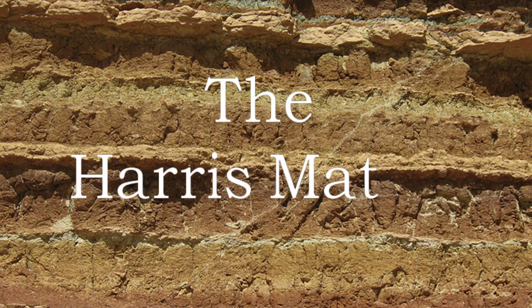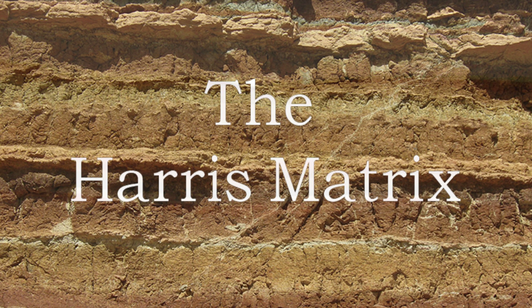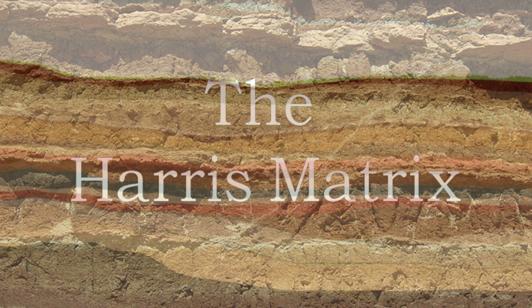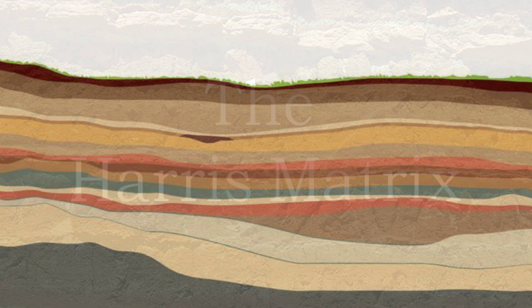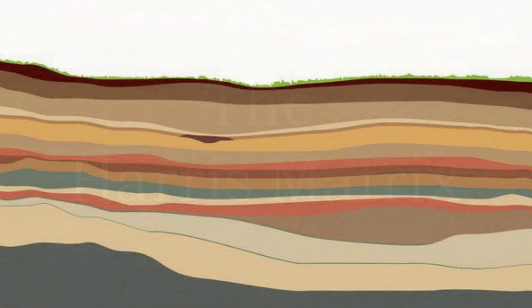The Harris Matrix is a method used in archaeology to record the stratigraphic layers or strata of an archaeological site. These layers are geological, environmental and archaeological formations and deposits, which are built up over time and represent different time periods.